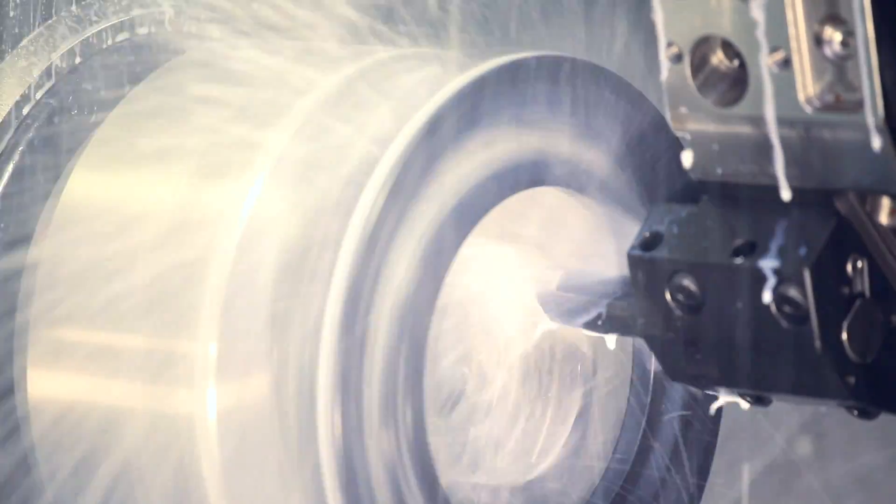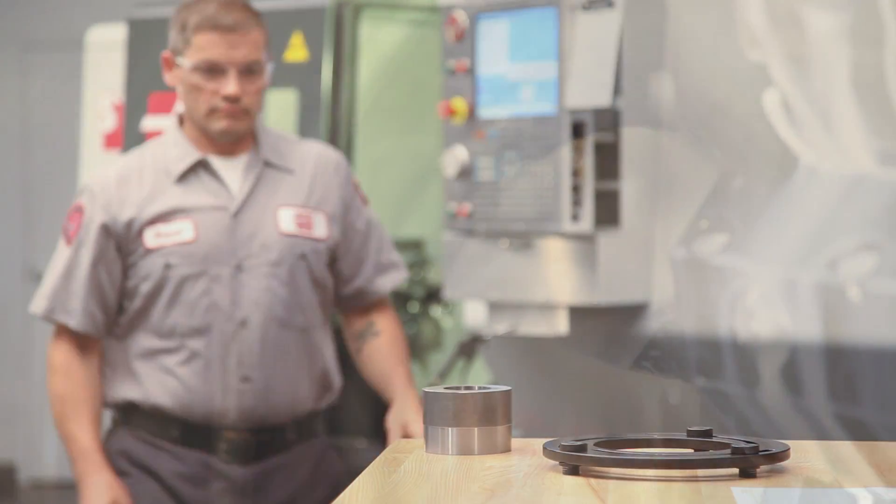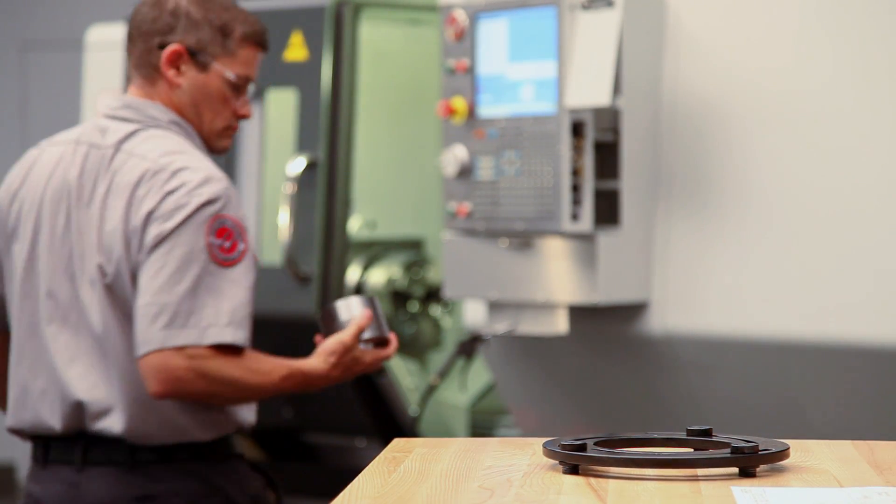Always skim cut the jaws for complete cleanup, but keep material removal to a minimum to get the most life out of your jaws. Now they are the correct bore size and once again concentric to the spindle.